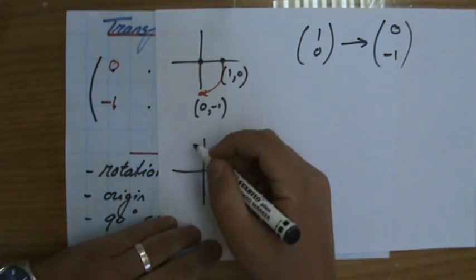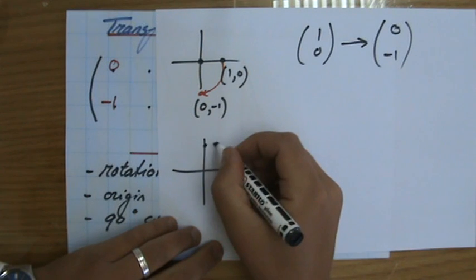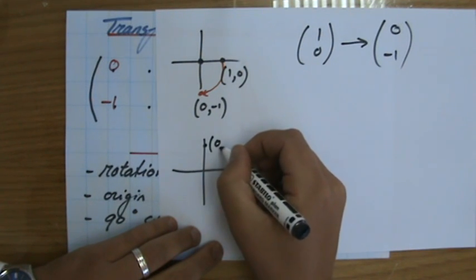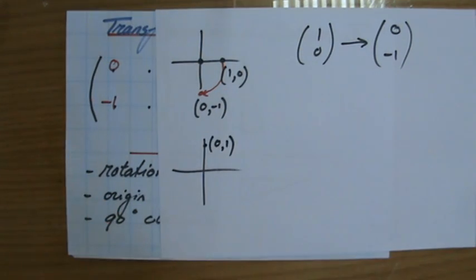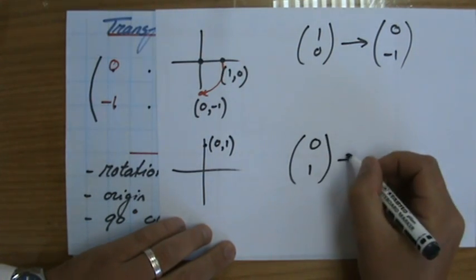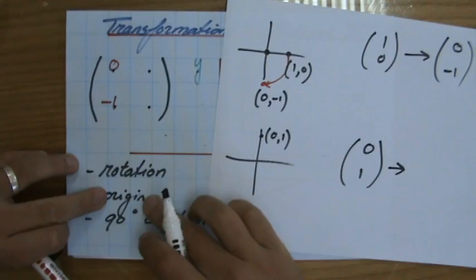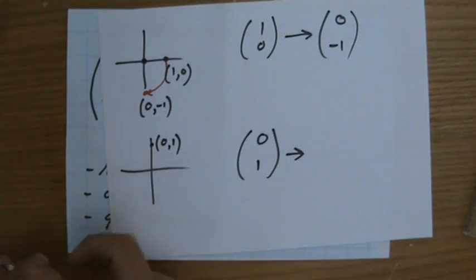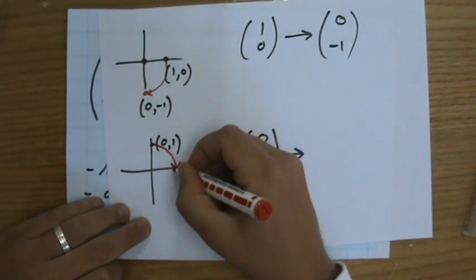The vertical point which is point (0,1), and where will that be after a rotation about the origin 90 degrees clockwise? Well that one will then be over here which is point (1,0).